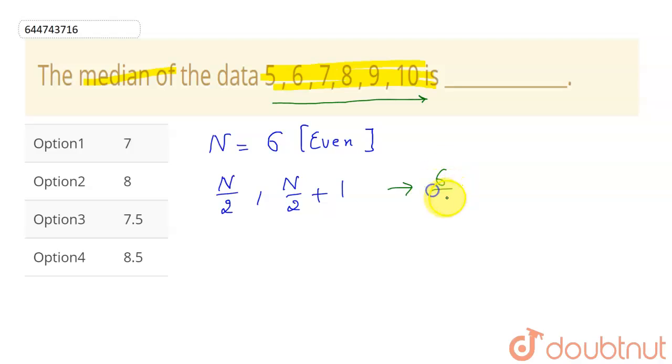and this n by 2 plus 1 will be 3 plus 1, which is my fourth term. So I have to select third and fourth.